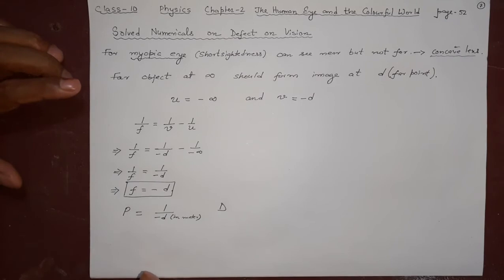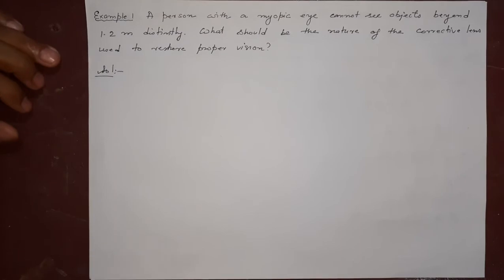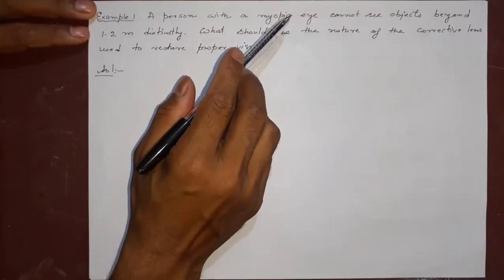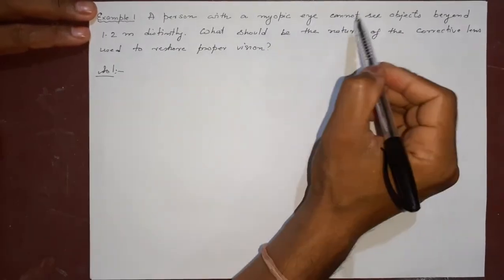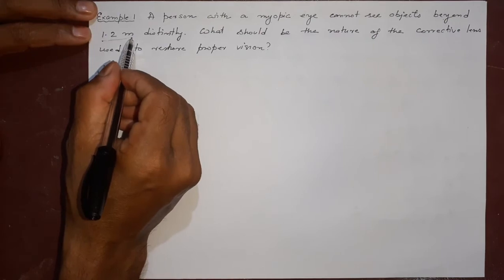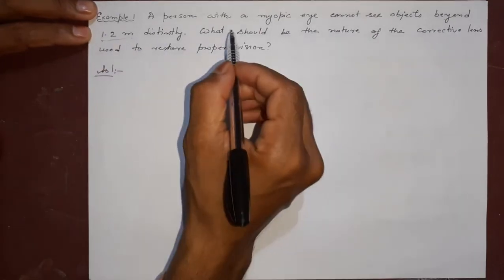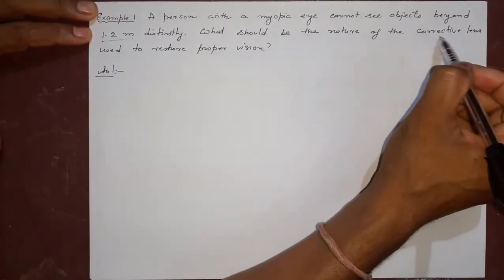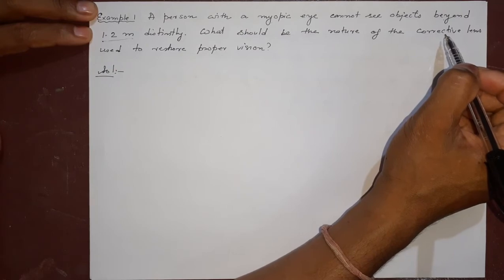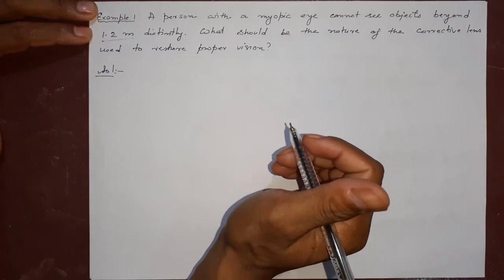Let's see this example: A person with a myopic eye cannot see objects beyond 1.2 meters distinctly. What should be the nature of the corrective lens? You already know the corrective lens is a concave lens. How much power and focal length is needed?